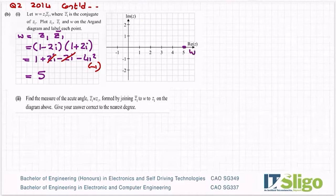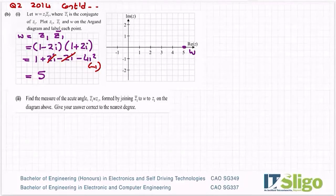Plotting on the Argand diagram: w is at 5 on the real axis. z1 is at (1, minus 2i) — that's below the real axis. The conjugate z1-hat is at (1, plus 2i) — above the real axis. Plot them and label each point.